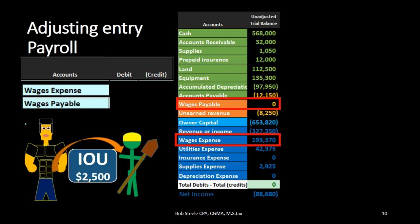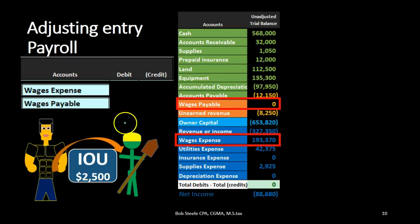We need to pull that into the financial statements — to tell readers that we have wages payable, meaning we owe workers money they've earned, and there are wages expenses incurred during this period. In a problem, the number is usually given directly. In real life, we'd estimate: if five days of work span the pay period and three days fell before the cutoff, we take the total payroll times the ratio of three-fifths. In this problem, the amount given is $2,500, so we'll debit wages expense for $2,500.